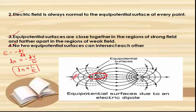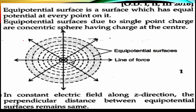Now I would like to explain the equipotential surfaces of various charge systems. The definition of equipotential surface: it is a surface which has equal potential at every point. The first case is the equipotential surface due to a single point charge.